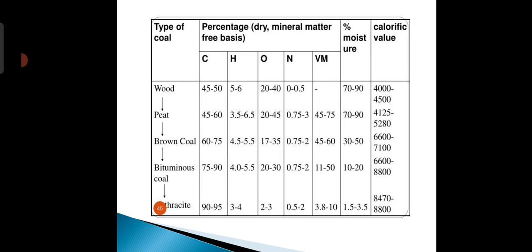For anthracite: the percentage of carbon increases to 90–95%, hydrogen 3–4%, oxygen 2–3%, nitrogen 0.5–2%, volatile matter 3.8–10%, moisture 1.5–3.5%, and the calorific value is the highest at 8,472–8,800.